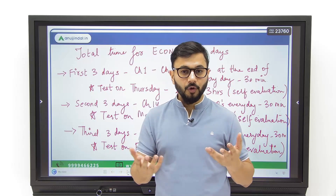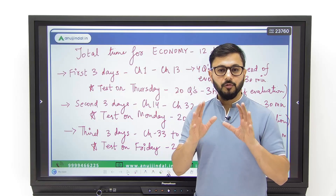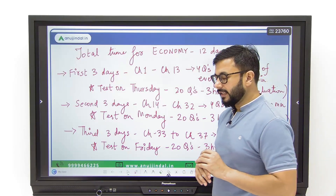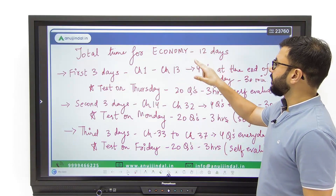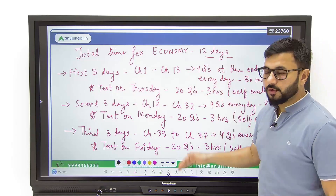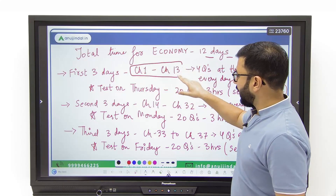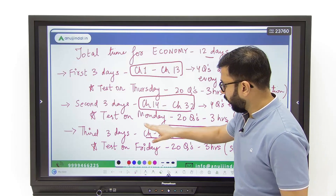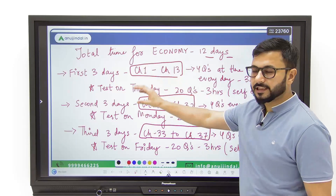If you're covering it for the first time, everyone knows in UPSC preparation that you need at least a month to prepare well for economy section alone. I'm assuming that you know the syllabus and understand the entire horizon of the syllabus. The total time I'm going to divide the entire preparation into is about 12 days and I'm going to give you the division as well. I have written some chapters here — chapter 1 to 13, chapter 14 to 32, and chapter 33 to 37.